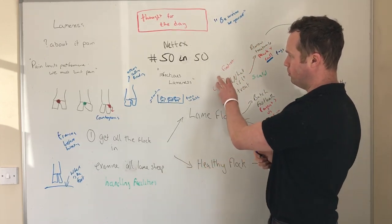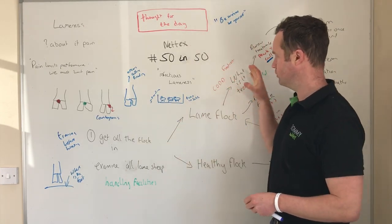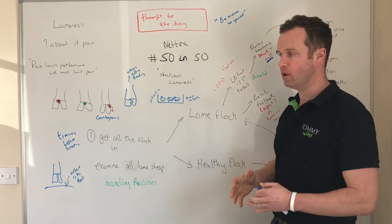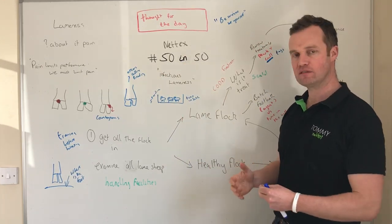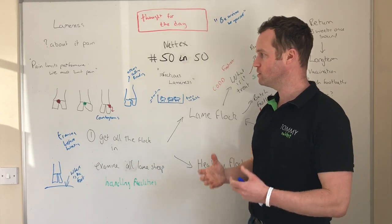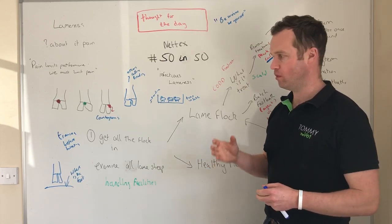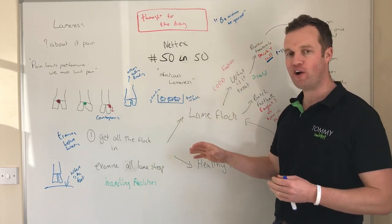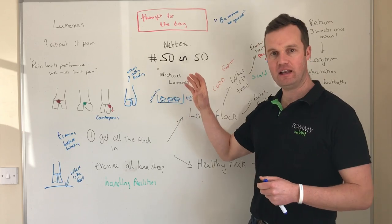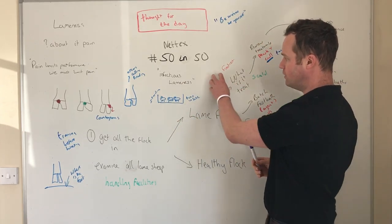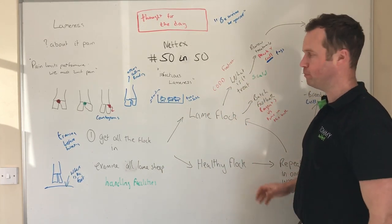I always push the message of prevention rather than just treatment. As things unfold there will be more and more influences on one-health and the reduction of antibiotic use. Sheep farming is generally a low user of antibiotics, but lameness is one area that can definitely improve. To be clear: CODD definitely needs antibiotic treatment, as does foot rot, while scald can work with foot bathing.